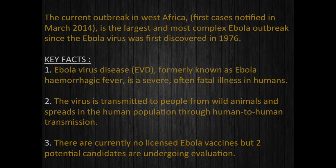Key facts. 1. Ebola virus disease, formerly known as Ebola hemorrhagic fever, is a severe, often fatal illness in humans. 2. The virus is transmitted to people from wild animals and spreads in the human population through human-to-human transmission. 3. There are currently no licensed Ebola vaccines, but two potential candidates are undergoing evaluation.